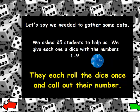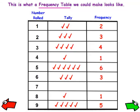Let's say we needed to gather some data. We asked 25 students to help us. We give each one a dice with the numbers 1 through 9. They each roll the dice once and call out their number. This is what a frequency table we could make would look like. Here you have the number that was rolled and this is how many people rolled that number.